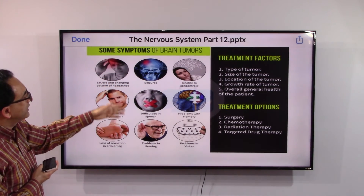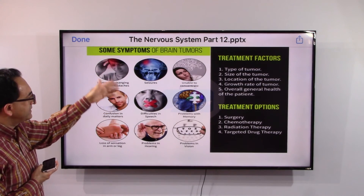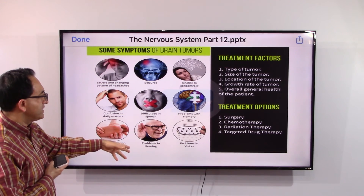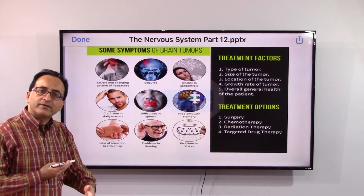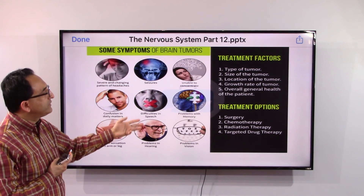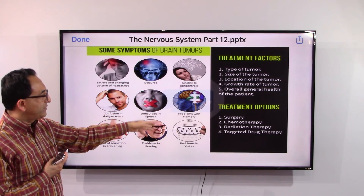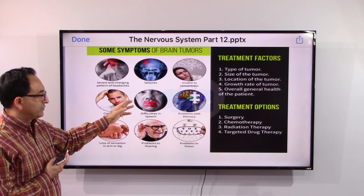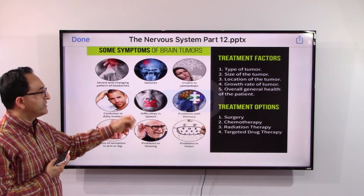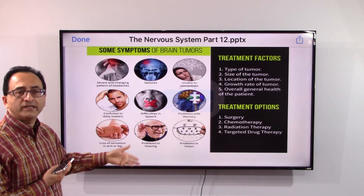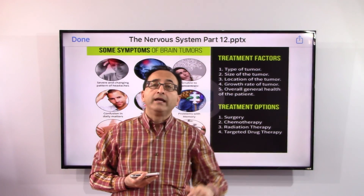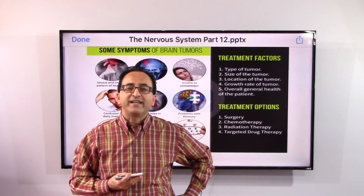Treatment depends upon the type, size, location, and growth of the tumor, as well as the overall general health of the patient. The doctor and surgeon will determine the best course of treatment. Options range from observation and medication to chemotherapy, surgery, or a combination of all of these as appropriate.